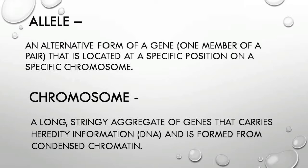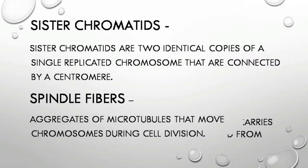Alleles: an alternative form of a gene; one member of a pair located at a specific position on a specific chromosome. Chromosome: a long, stringy aggregate of genes that carries hereditary information in DNA, formed from condensed chromatin.